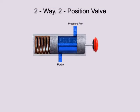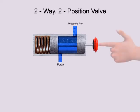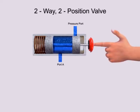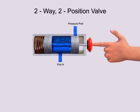This spool valve has two ports and two positions. The first position allows fluid to flow freely. The second position blocks both ports. Even though both ports aren't physically blocked, the lack of fluid entering the pressure port also prevents fluid from exiting outlet port A. Therefore, both ports are defined as blocked, making it a two-way, two-position valve.